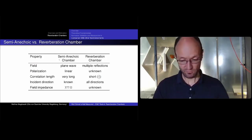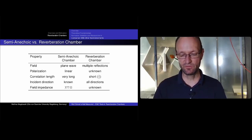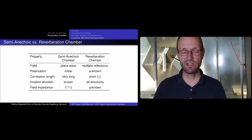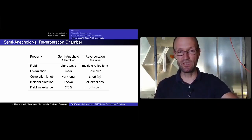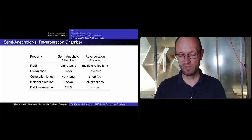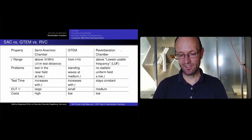In comparison: in the semi-anechoic chamber you have a plane wave field, linear polarization, a long correlation length, a known incident direction, and a well-defined field impedance of 377 Ω. In the reverberation chamber you have many reflections, unknown polarization, a very short correlation length of about half a wavelength, field arriving from all directions simultaneously, and a field impedance whose average or median is known but which varies widely at any given position.